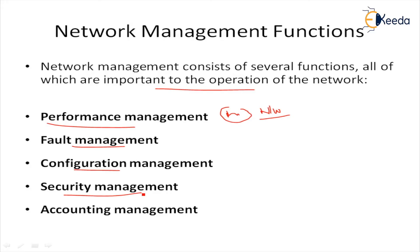Next is security management. Security management includes administrative functions such as authentication of users and setting attributes like read and write permissions on a per-user basis. From a security perspective, the network is usually partitioned into domains — horizontal and vertical. Vertical partition implies that some users may be allowed to access only certain network elements; for example, local craft persons may be allowed to access only specific network elements they are responsible for.